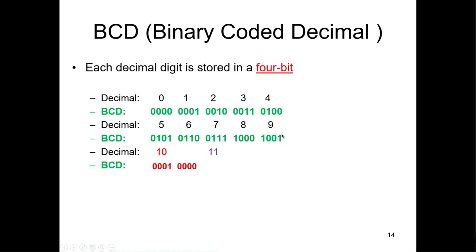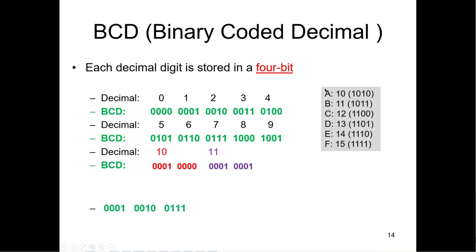Remember binary coded decimal. When you do binary coded math, you have to adjust for six. You have the upper six — A, B, C, D, E, F — that aren't valid because they exceed zero through nine.